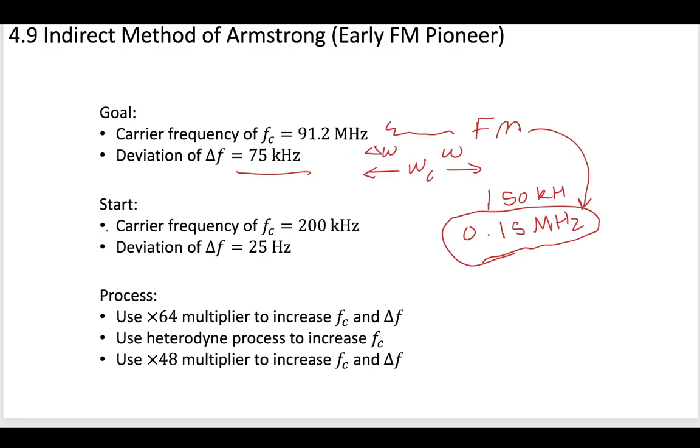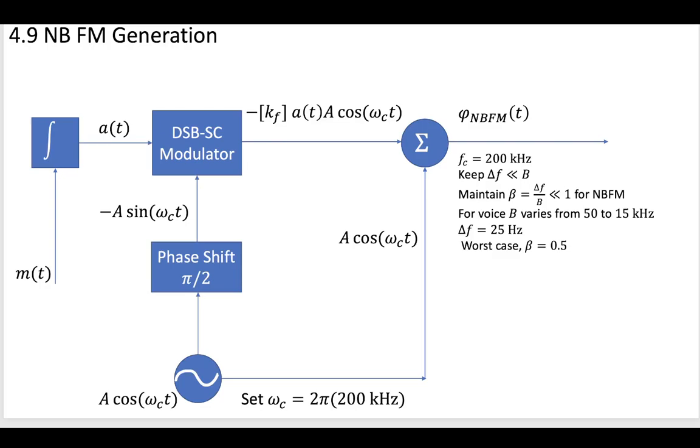So the goal is to create some signal that has that amount of bandwidth and that carrier frequency. To start with, we're going to start with a carrier frequency of 200 kHz. This is very low, much lower than the goal, and a small frequency deviation. We're going to multiply this up, kind of ratchet it up using these nonlinear devices, in order to get to this goal. The process will use a 64 multiplier to increase the carrier frequency and deviation, then a heterodyne process to change the carrier frequency, and then another multiplier to finalize the carrier frequency and bandwidth of the channel, which is related to that deviation.